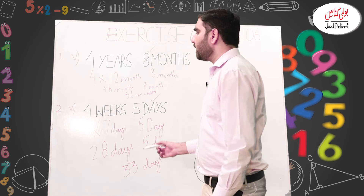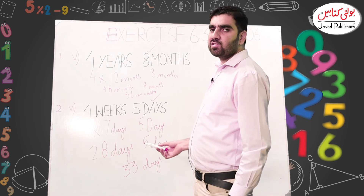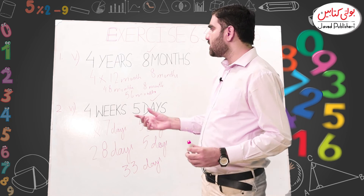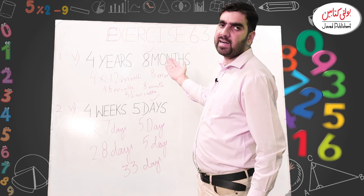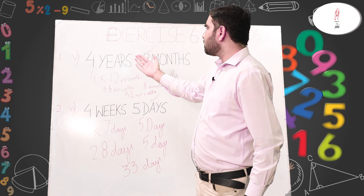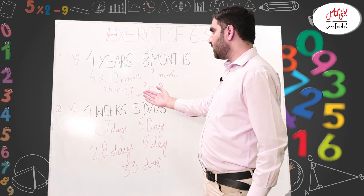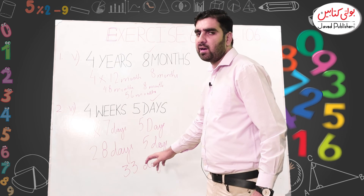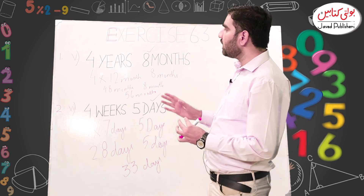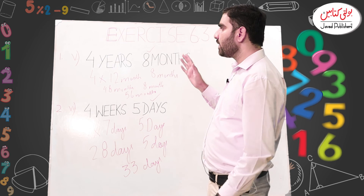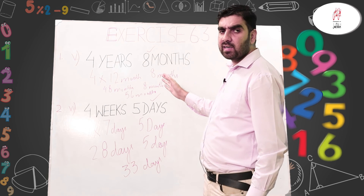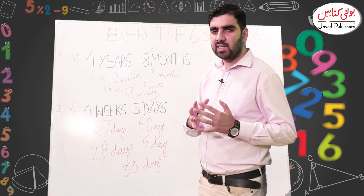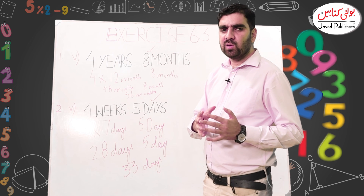In this question we added four weeks and five days together and got thirty-three days. One more concept to brief students on: same units are always added together. Years cannot be added to months, and months cannot be added to days. Here, months are added to months and days are added to days. I hope this video has clearly explained how to convert years into months and weeks into days. Thank you for watching.